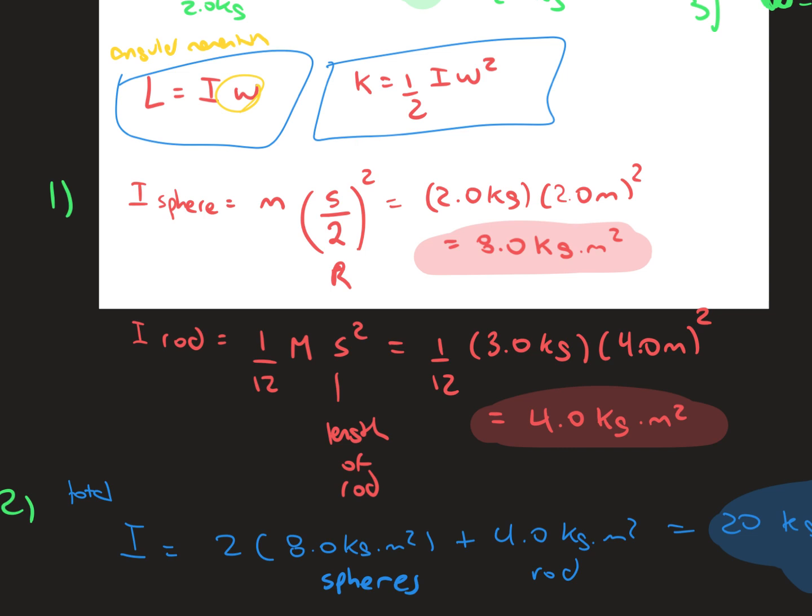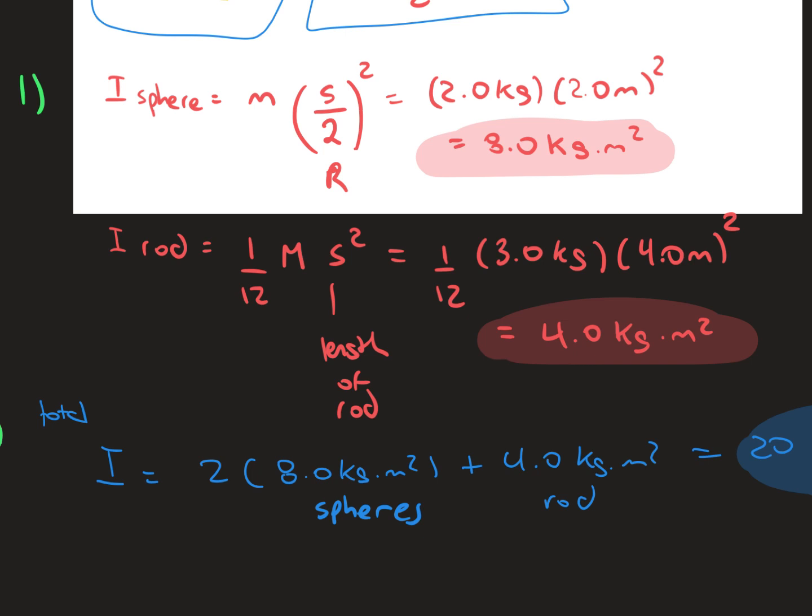The moment of inertia of the sphere is going to be the mass times r squared, where r is half the distance. So 2 kilograms times 2.0 meters squared equals 8 kilograms meter squared for the moment of inertia of the sphere.